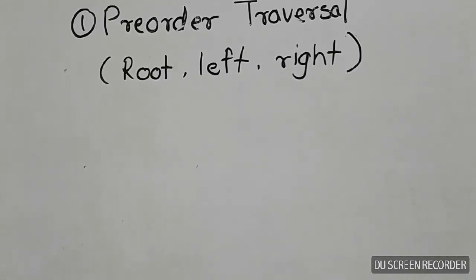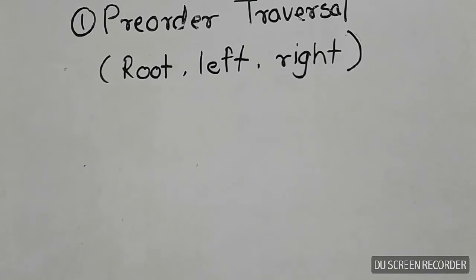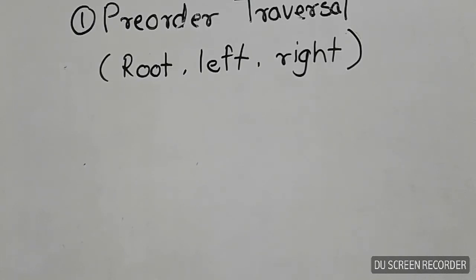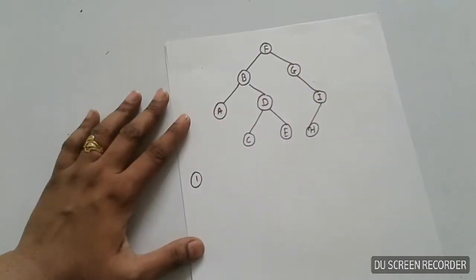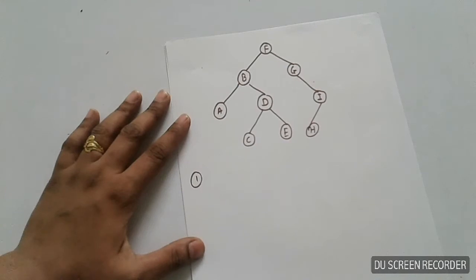In pre-order traversal, first we have to visit the root of the tree, then the left child of the tree, and then the right child of the tree. Consider this example. We have to traverse this tree in pre-order. So first we will visit the root, then the left child, and then the right child of the tree.